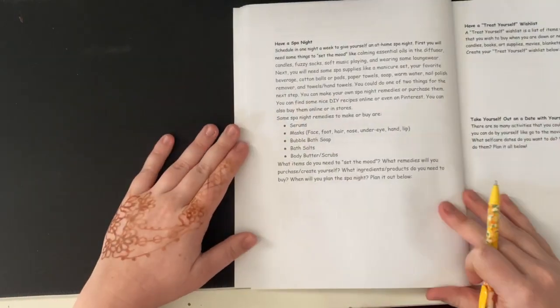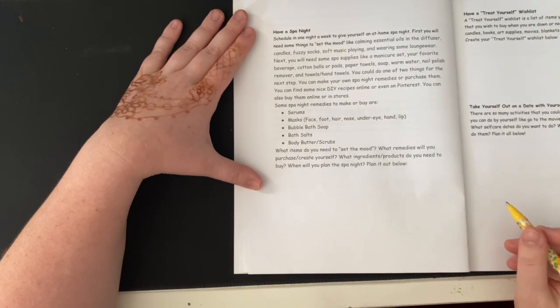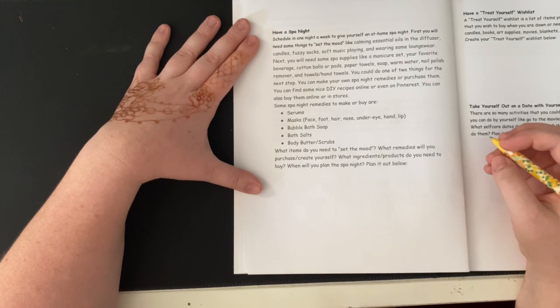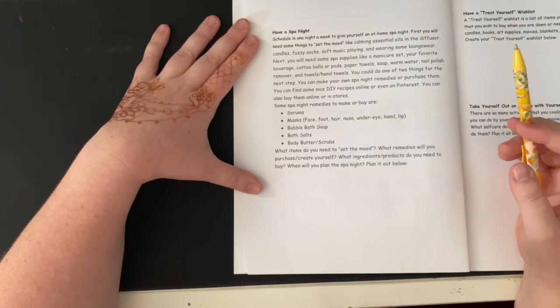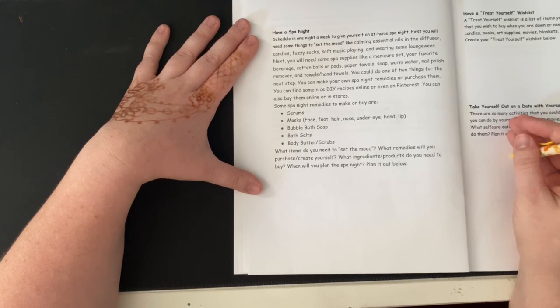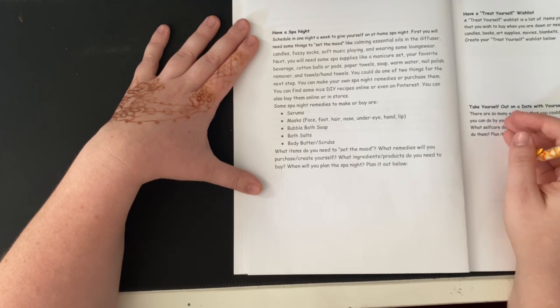So the first thing is have a spa night. Schedule in one night a week to give yourself an at-home spa night. First, you will need some things to set the mood, like calming essential oils in a diffuser, candles, fuzzy socks, soft music playing, and wearing some lounge wear.